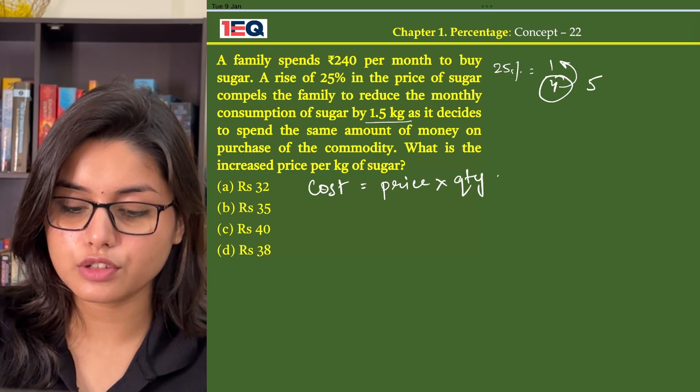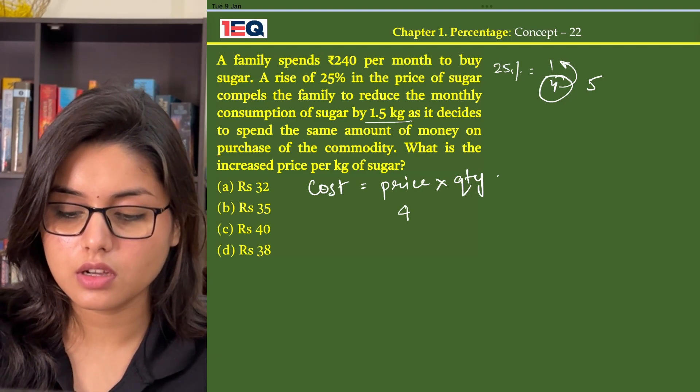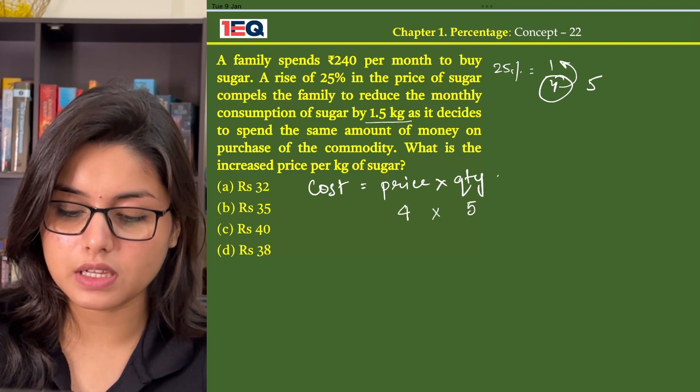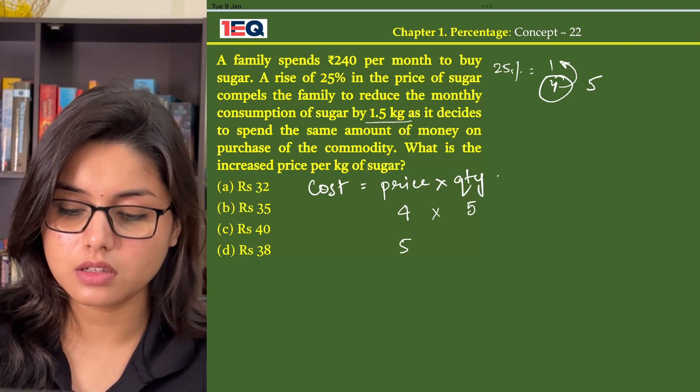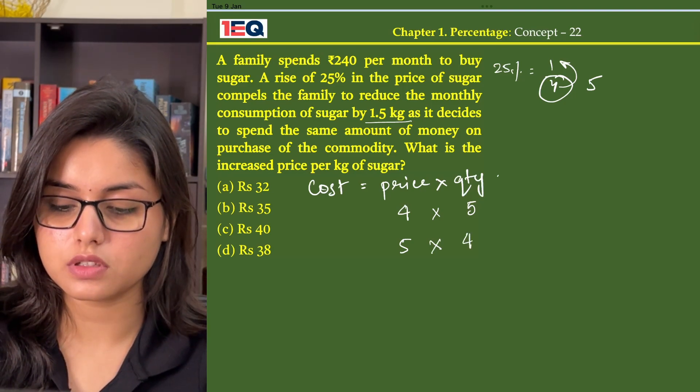So when the cost of sugar was 4, let's assume that the family bought 5 units of the quantity. And when the price has been increased by 1, the family has to cut down and now they buy only 4 units.